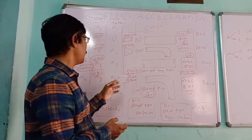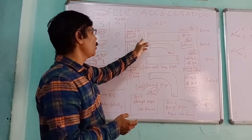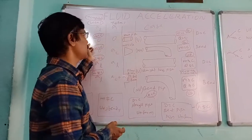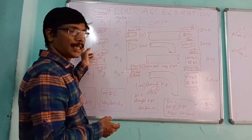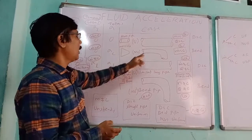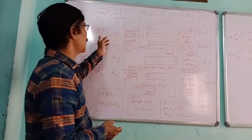So by observing these things, in uniform flow, convective acceleration is zero. In non-uniform flow, convective acceleration exists. In uniform flow, convective acceleration is zero.